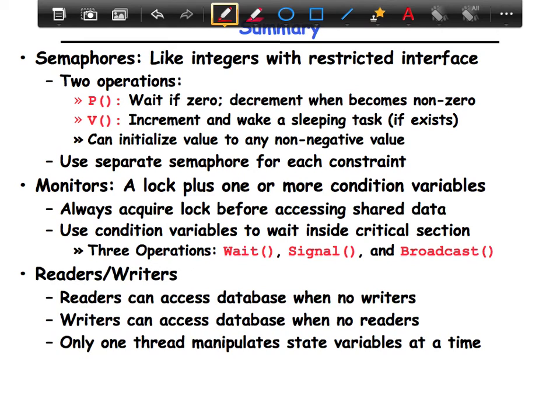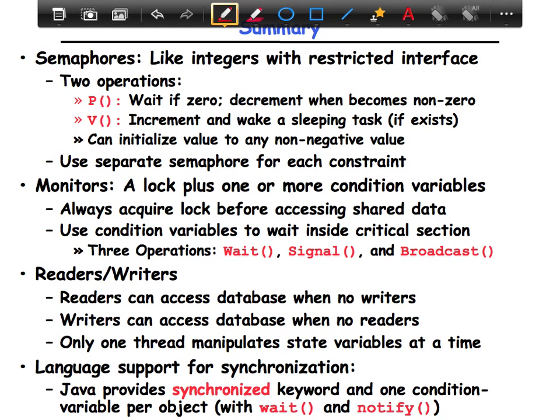And finally, we looked at the reader-writer problem where you have readers and writers accessing the database, and we made an effort to increase the parallelism knowing the fact that a given task can either be only a reader or a writer. So readers can, multiple readers can access the database at the same time when there are no writers. Only one writer can access the database when there are no readers and there are no other writers.